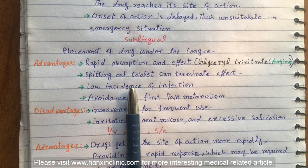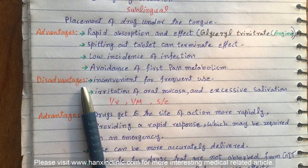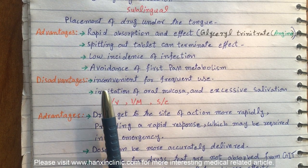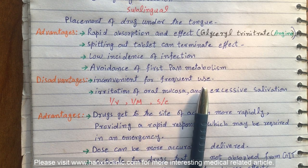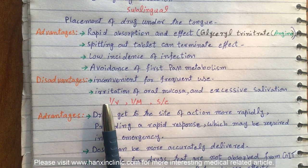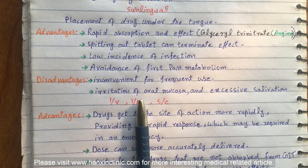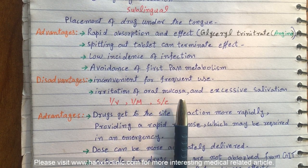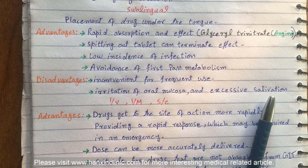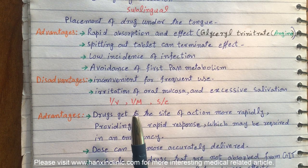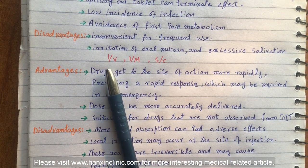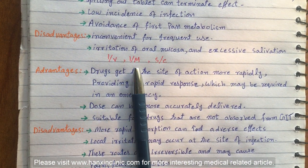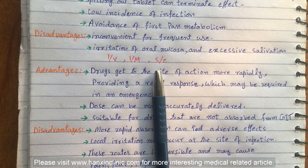The disadvantages of sublingual route are: it is inconvenient for frequent use, and irritation of oral mucosa and excessive salivation may occur. The next routes to discuss are intravenous, intramuscular, and subcutaneous.